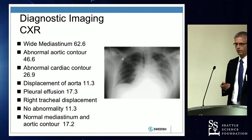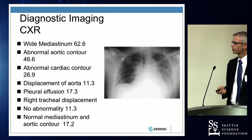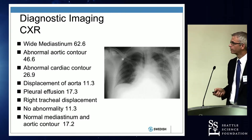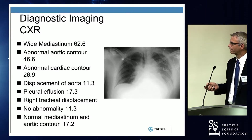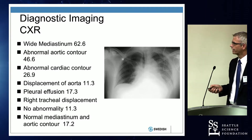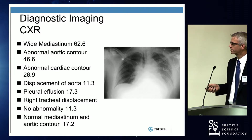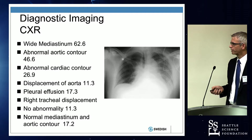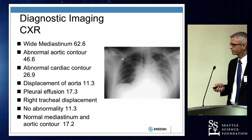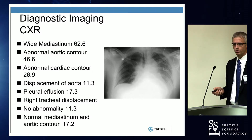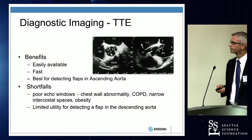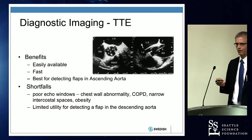A chest X-ray — everybody with chest pain who comes to the emergency department gets one. The most common finding is a widened mediastinum, seen in 62% of patients. This is a patient with a wide mediastinum. There can also be an abnormal cardiac contour, tracheal displacement, and pleural effusions. But roughly one in 10 to 12 patients, the chest X-ray can be perfectly normal — this is why I always say surgeons have the easy job.